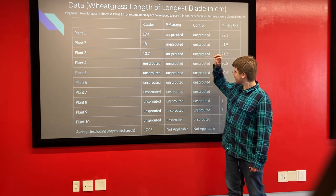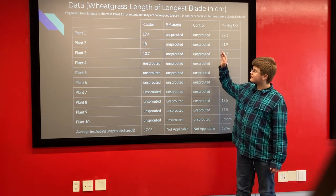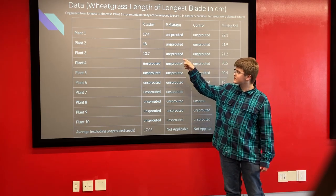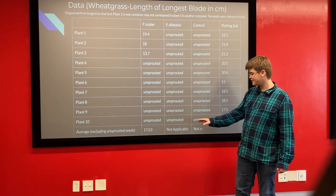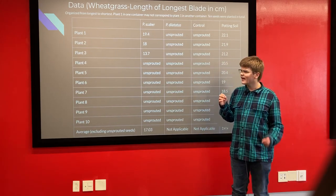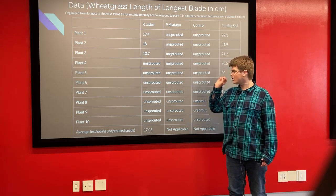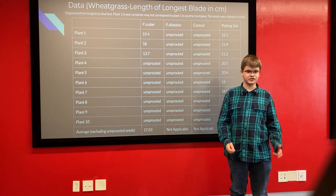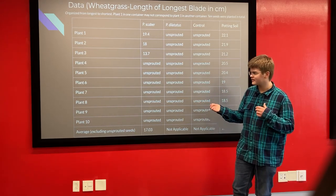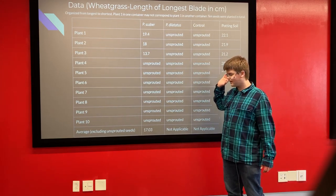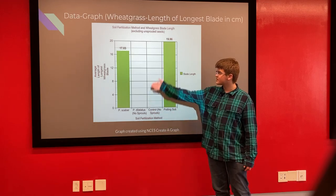Only 12 of the 40 wheatgrass plants I planted actually sprouted. I have a few ideas about why this may have happened. The two tubs that did show growth had pretty good results — aside from one outlier at 13.7 cm, they were quite similar, with averages only a couple centimeters apart. They actually grew quite well in Porcelio scaber and potting soil, but did not grow at all in Porcelio dilatatus or the control. That is certainly an interesting outcome considering I expected the two isopod tubs and the potting soil to perform almost identically. A graph shows the same information with the averages.